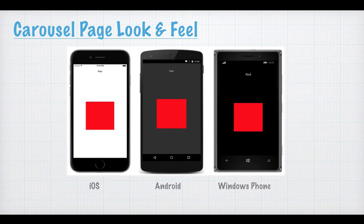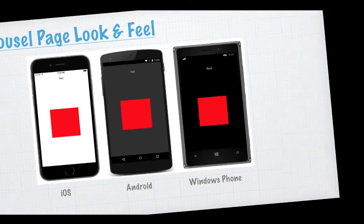So how does the carousel page look? It's very simple — on iOS, Android, and Windows Phone it always shows you only one page at a time. You can't feel anything different; you only see one thing at a time, there is nothing in the footer unless you have added it, and there is nothing in the header either.